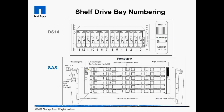Shelf Drive Bay Numbering: Drive bays of the old DS14 shelves are numbered from right to left. Bays 0 and 1 enable the enclosure services, so always ensure at least one of those bays has a working disk drive to prevent the shelf from going offline.